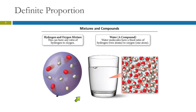Here we have this illustrated. This is a hydrogen and oxygen mixture. You could have any ratio of hydrogen to oxygen, but in water, the ratio is always the same. That's an important difference between a mixture and a compound.